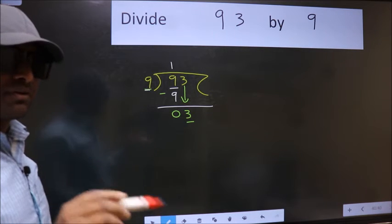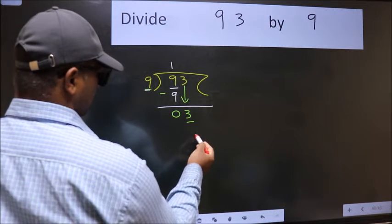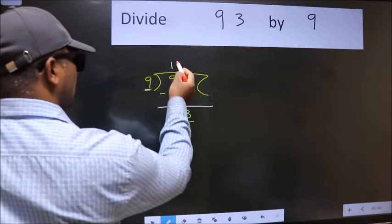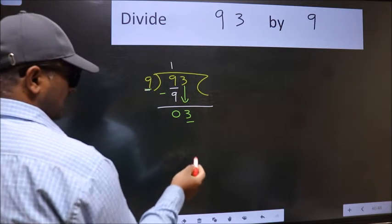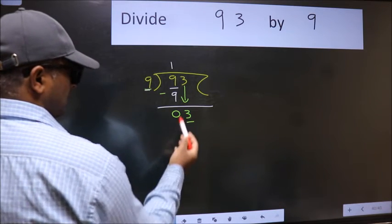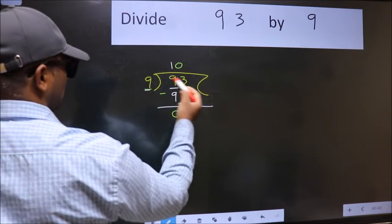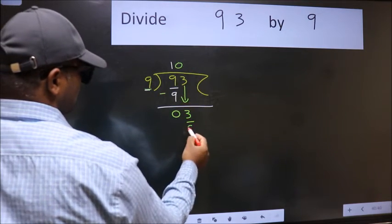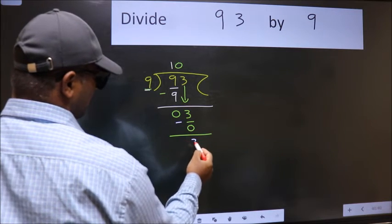Instead of that, what we should think of doing is, which number should we take here? If I take 1, we will get 9. But 9 is larger than 3. So what we do is, we take 0. So 9 into 0, 0. Now we subtract. We get 3.